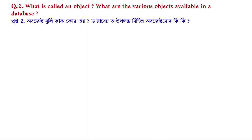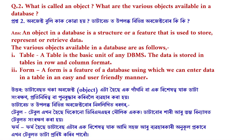Question number 2: What is called an object? What are the various objects available in a database? Answer: An object in a database is a structure or a feature that is used to store, represent, or retrieve data. The various objects are as follows. Table: A table is the basic unit of any DBMS; data is stored in tables in row and column format. Form: A form is a feature of a database using which we can enter data in a table in an easy and user-friendly manner.